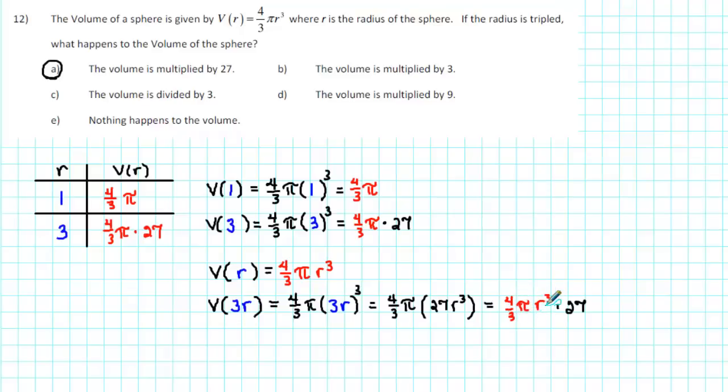Now, in place of (4/3)πr³, we can substitute the original volume, V(r).